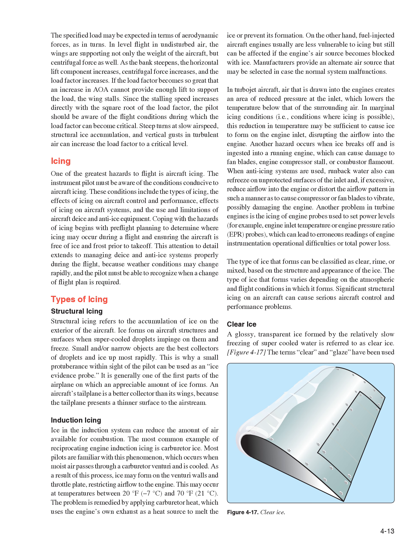Types of Icing — Structural Icing. Structural icing refers to the accumulation of ice on the exterior of the aircraft. Ice forms on aircraft structures and surfaces when supercooled droplets impinge on them and freeze. Small and/or narrow objects are the best collectors of droplets and ice up most rapidly. A small protuberance within sight of the pilot can be used as an ice evidence probe, as it is generally one of the first parts of the airplane on which an appreciable amount of ice forms. An aircraft's tailplane is a better collector than its wings because the tailplane presents a thinner surface to the airstream.